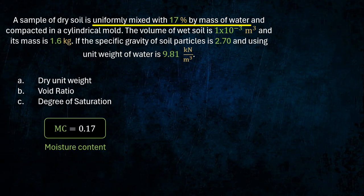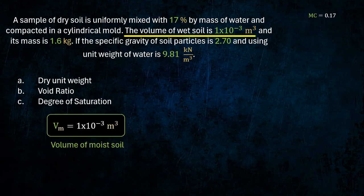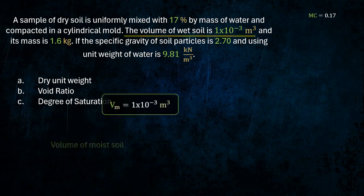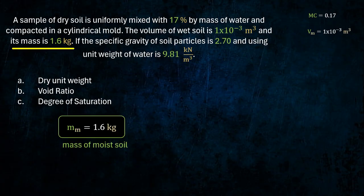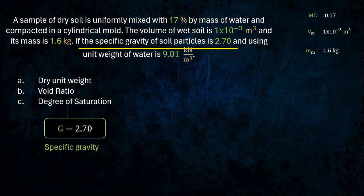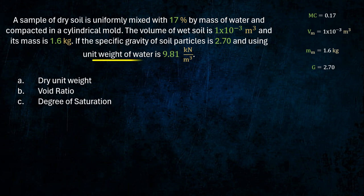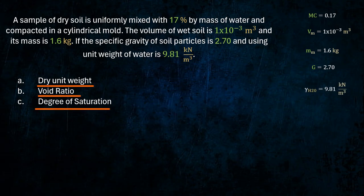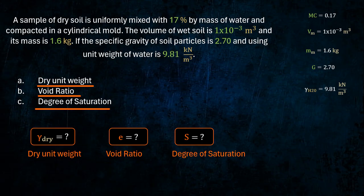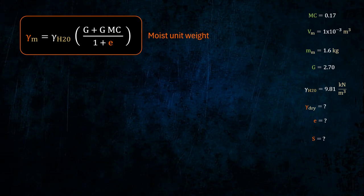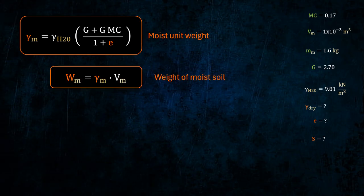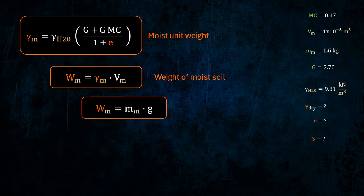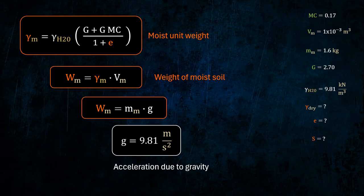Moisture content. Volume of moist soil, mass of moist soil, specific gravity, unit weight of water, temperature. Moist unit weight: weight of moist soil divided by acceleration due to gravity.